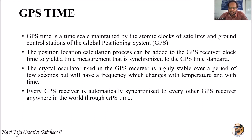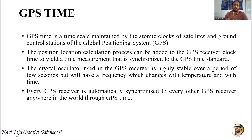For a time measurement that is synchronized to a GPS time standard, we need an oscillator for each clock pulse. A crystal oscillator is used in the GPS receiver, which is highly stable over a period of a few seconds, but it will have a change in frequency with respect to temperature and also with respect to time.